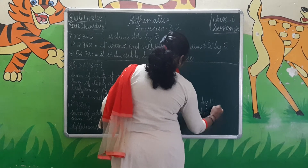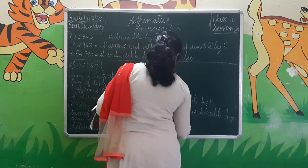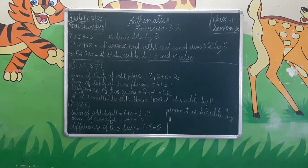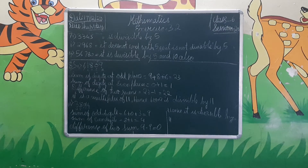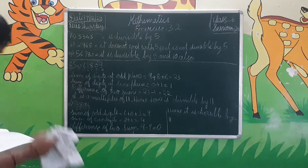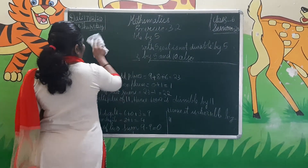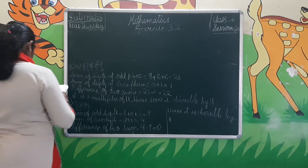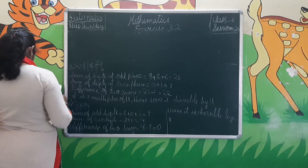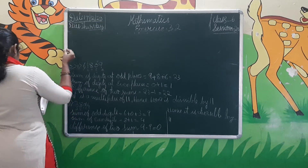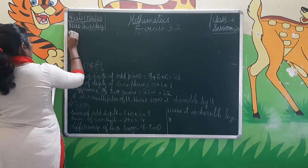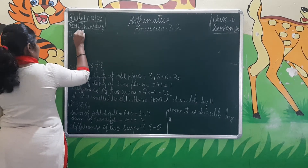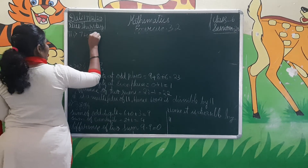Hence 38,016 is divisible by 11. Next, come to the third number: 7,46,928.